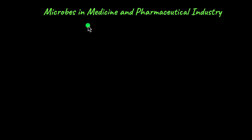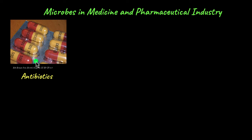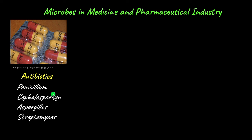Next, we'll look at microbes in the medicine and pharmaceutical industry, which produces many beneficial substances used to treat diseases. First, antibiotics — it's quite ironic that we use microbes to produce antibiotics, which in turn can kill many microbes. Antibiotics are generally extracted from fungal species. Penicillium was the first species from which the antibiotic penicillin was extracted by Alexander Fleming. Apart from Penicillium, Cephalosporium, Aspergillus, and Streptomyces are other species from which antibiotics like Cephalosporin are extracted.